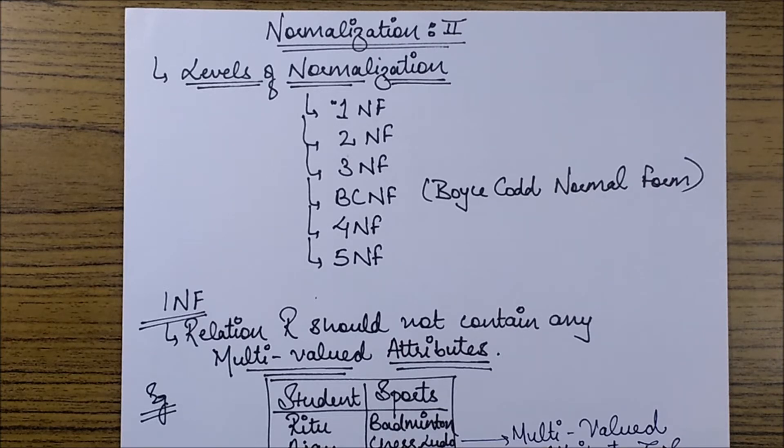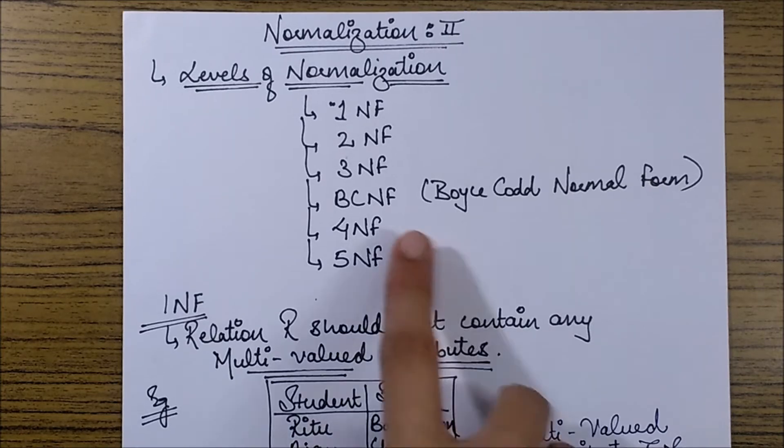As we all know, there are many forms of normalization, basically from 1NF to moving on to 5NF, and there is also a special form which is called BCNF.